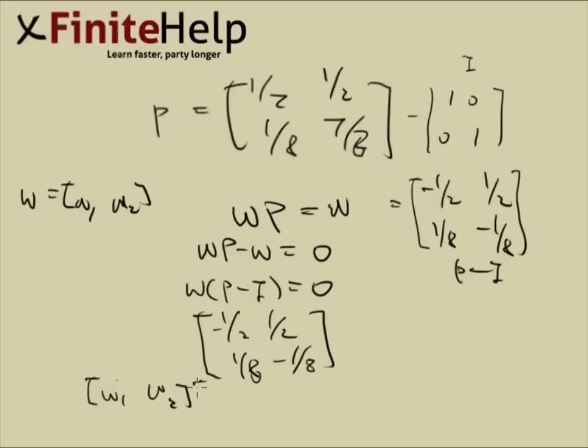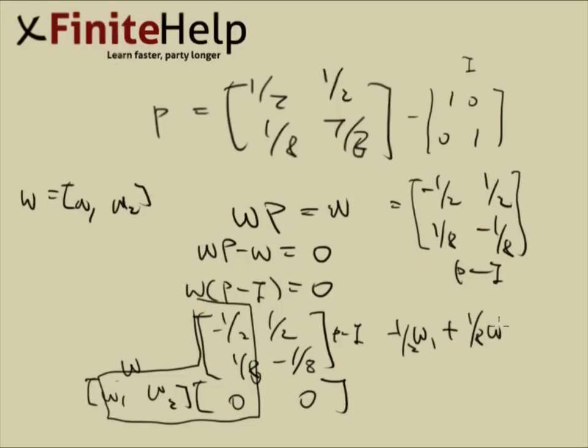And we know w times p minus i equals 0. So how multiplication works is you look at this inverted L. And you take w1 times negative 1 half plus 1 eighth times w2. That's going to be this number, which is 0. That's one equation.